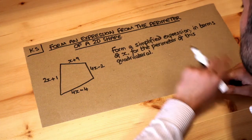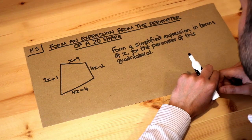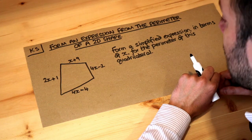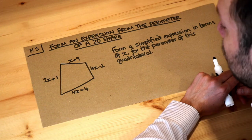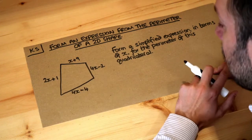It asks us to form a simplified expression in terms of x for the perimeter of this quadrilateral. Now let's think, how would we usually find the perimeter of a shape? We add together each of the lengths.